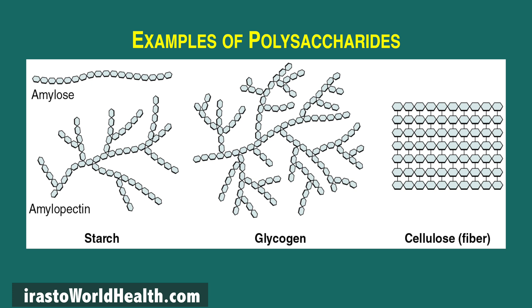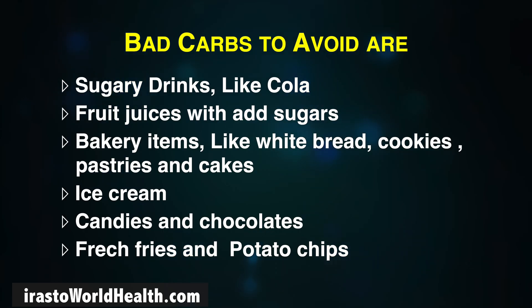In amylose, glucose units are arranged linearly in a straight line, while in amylopectin they are branched. The glycogen structure is similar to amylopectin with glucose units, but it is more branched, which is useful for breaking down into glucose as an immediate source of energy. Cellulose is bound strongly with beta-1,4 glycosidic linkages. You should be avoiding the bad carbs displayed, which raise your blood sugar and are bad for health in the long term.